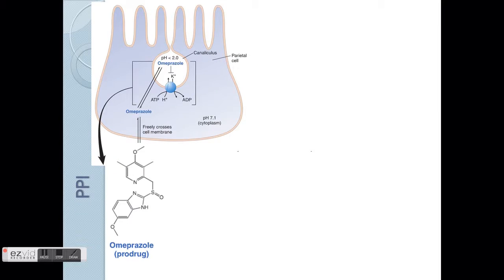Next, we talk about PPI, the proton pump inhibitor. This shows the parietal cells, which you've seen in Part A. One example of PPI — the first one, similarly like cimetidine for H2 antagonists — is omeprazole. It's one of the weaker ones in terms of potency. The mechanism of action for PPI is slightly more complicated because it is actually a pro-drug.